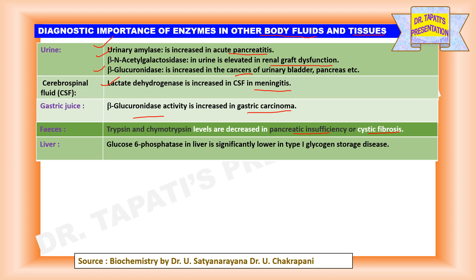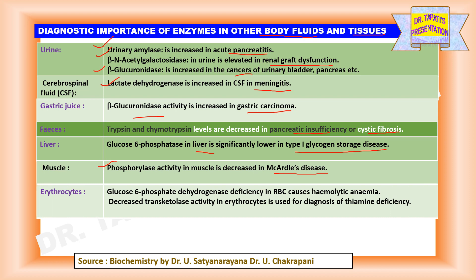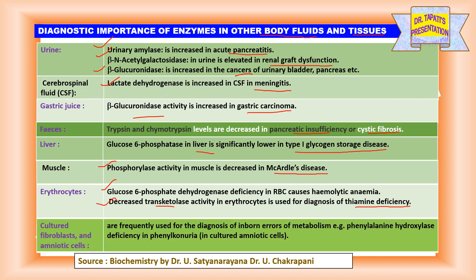Glucose-6-phosphatase in liver is significantly lower in type 1 glycogen storage disease. Phosphorylase activity in muscle is decreased in McArdle's disease. Glucose-6-phosphate dehydrogenase deficiency in RBC causes hemolytic anemia. Decreased transketolase activity in erythrocytes is used for diagnosis of thiamine deficiency. Cultured fibroblasts and amniotic cells are frequently used for the diagnosis of inborn errors of metabolism, for example, phenylalanine hydroxylase deficiency in case of phenylketonuria in cultured amniotic cells.